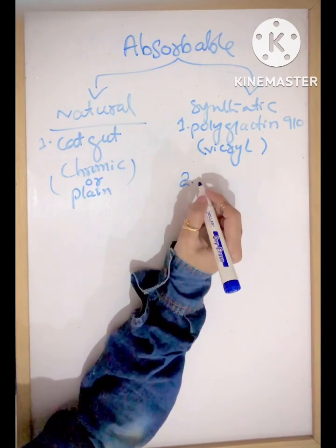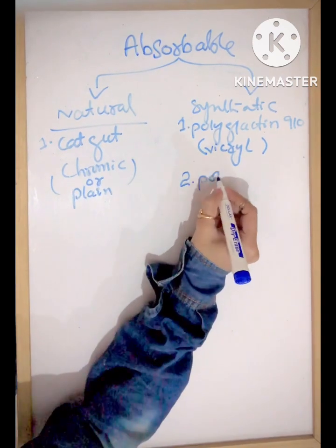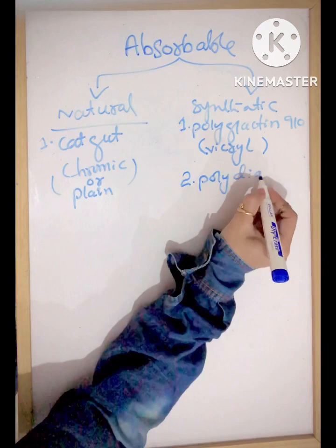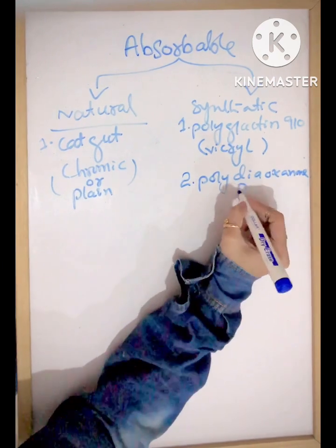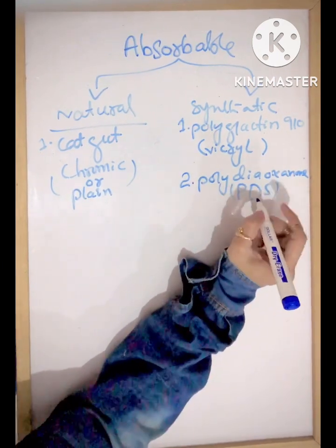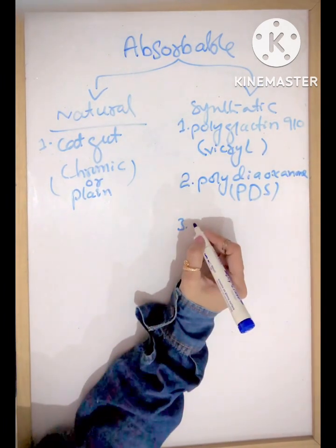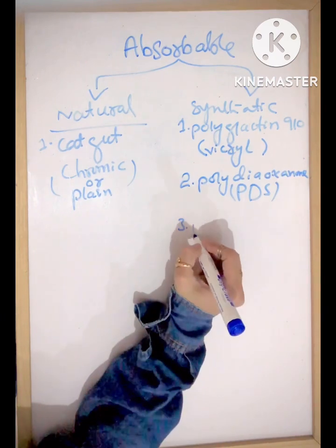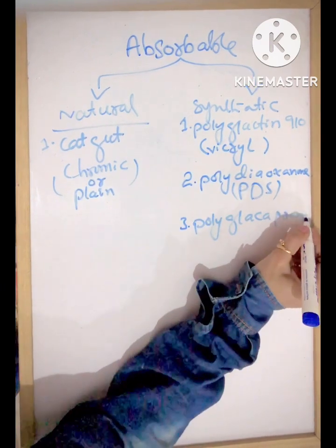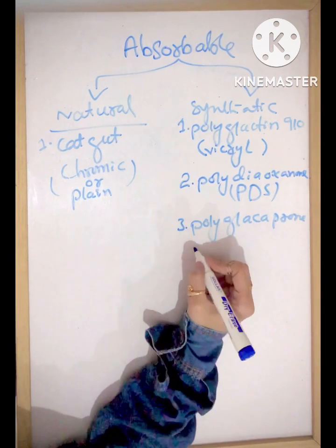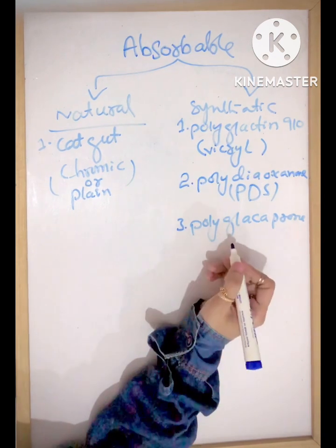Number two synthetic absorbable suture is polydioxanone, also known as PDS. Number three is polyglycoprone, which has 25 to 50 percent tensile strength.